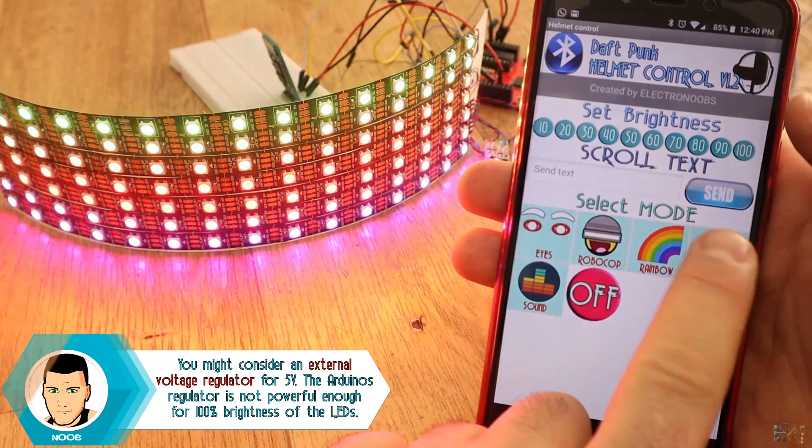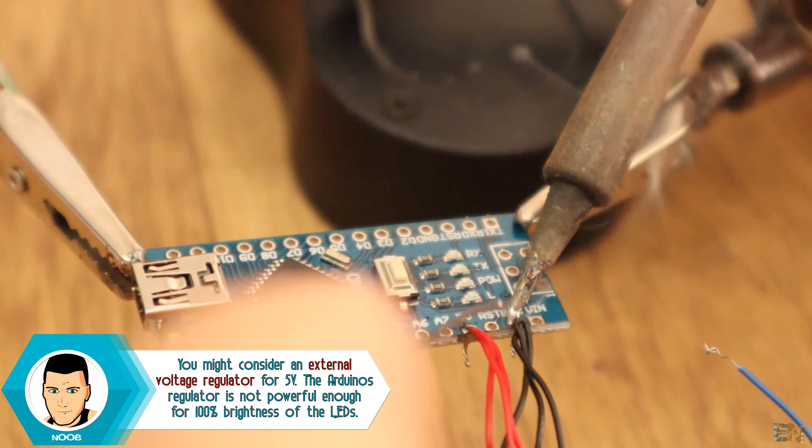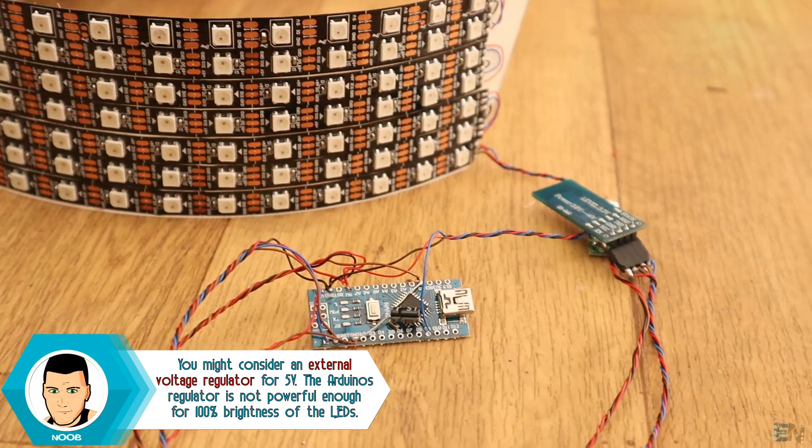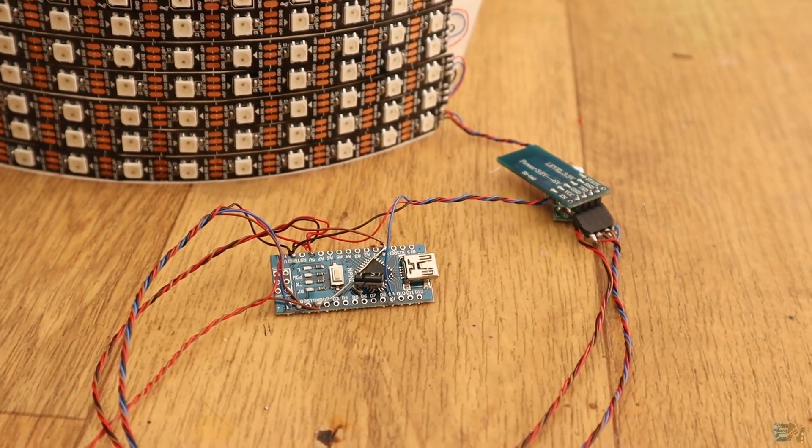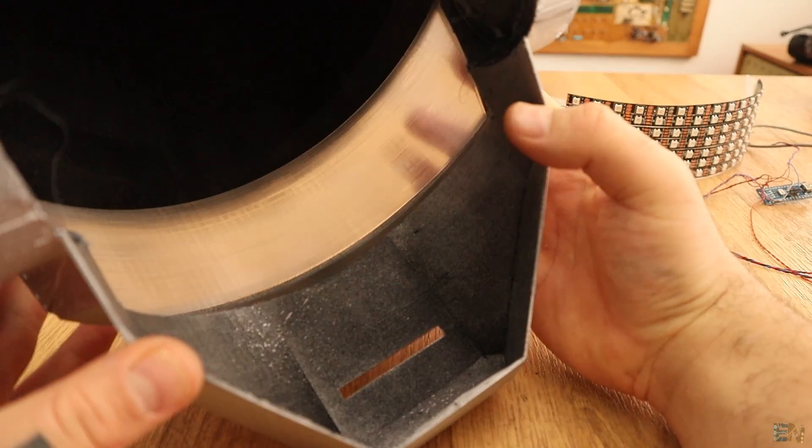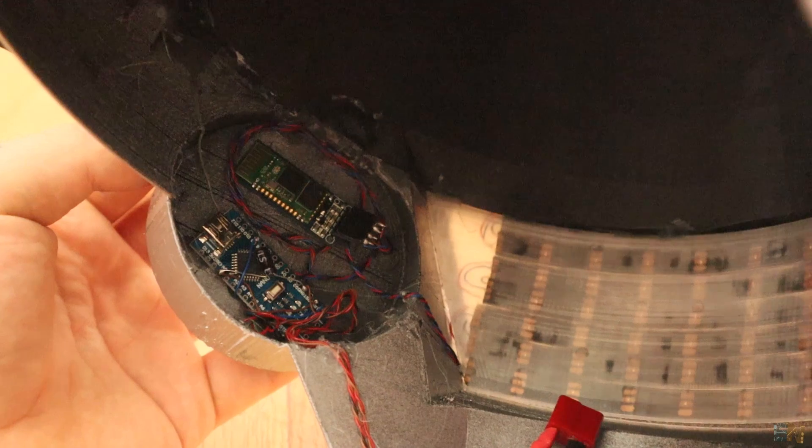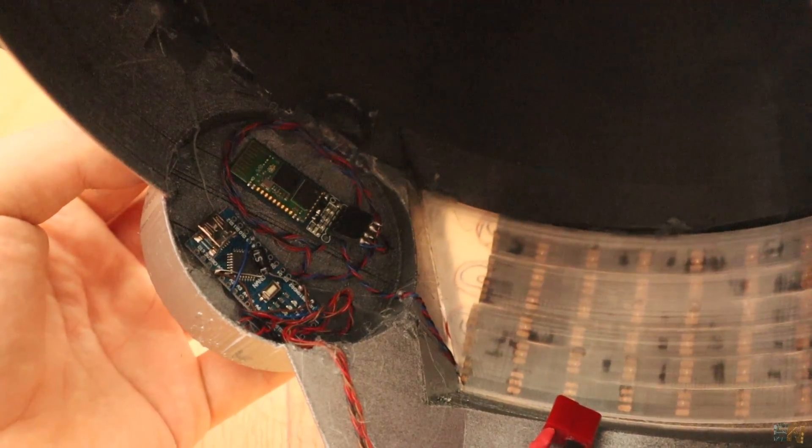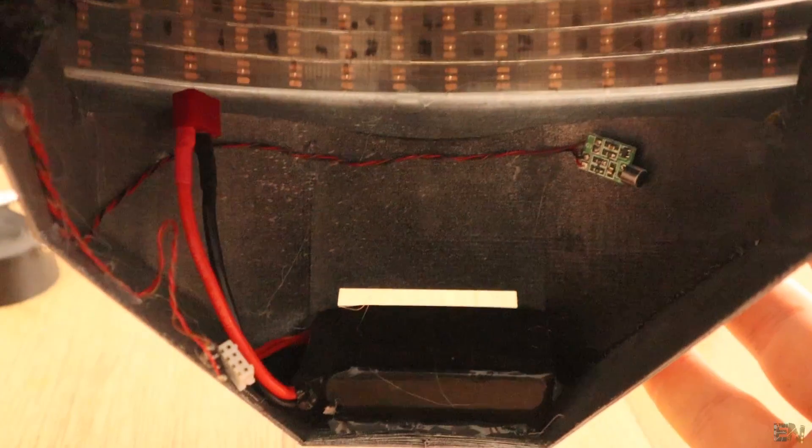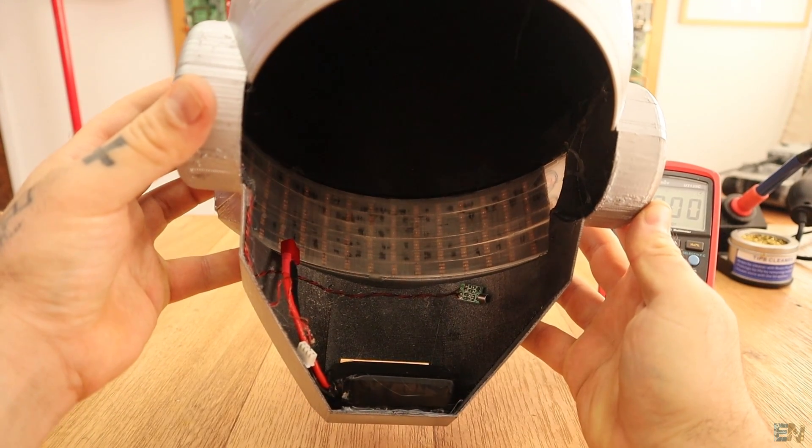Now that I know that everything works, I solder the cables to a smaller Arduino Nano. I add the microphone and the Bluetooth module with longer wires. Now, I first glue the visor without LEDs inside of the plastic helmet. Then I add the visor with the LED strip and I glue the Arduino and the Bluetooth module on the right ear. I put the microphone close to my nose and the battery below the mouth. And that's it, this is how the circuit is glued inside of the helmet.